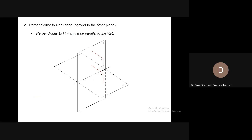Perpendicular to one plane must be parallel to the other. Perpendicular to HP must be parallel to VP. The two planes of projection are orthogonal or perpendicular to each other. Anything perpendicular to one plane must be parallel to the other, but if the line is parallel to one plane, it may or may not be perpendicular to the other, as we will see later.